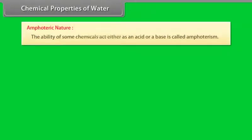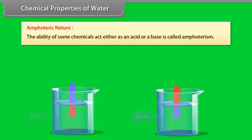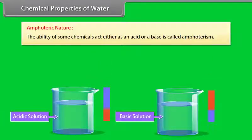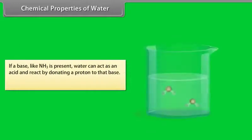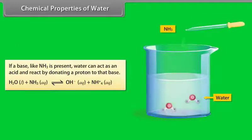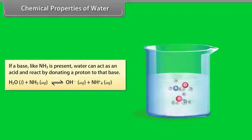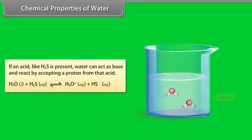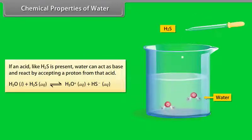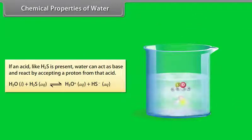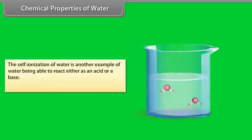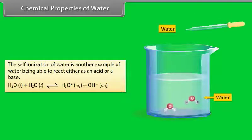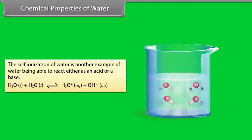The ability of some chemicals to act either as an acid or a base is called amphoterism. If a base like NH3 is present, water can act as an acid and react by donating a proton to that base. If an acid like H2S is present, water can act as a base and react by accepting a proton from that acid. The self-ionization of water is another example of water being able to react either as an acid or a base.